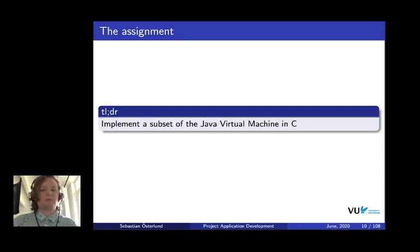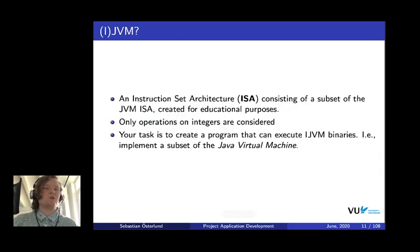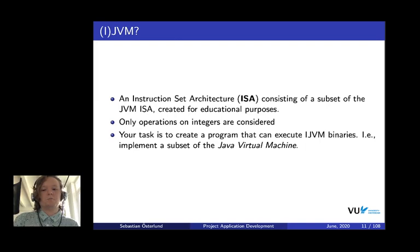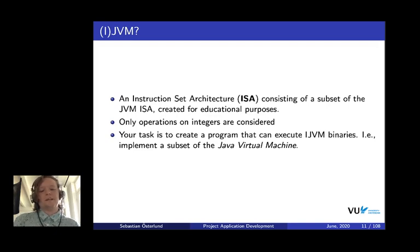In short, you have to implement a subset of the Java Virtual Machine in C, which sounds like a huge task. The JVM is an instruction set architecture (ISA). The IJVM is a subset of the Java Virtual Machine instruction set, created by Andy Tannenbaum for educational purposes. It only considers operations on integers, so it's much smaller than the full Java instruction set but still quite interesting. In the end, you will create a program that takes IJVM binary as input and runs it successfully.